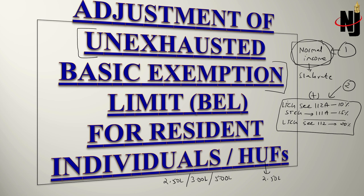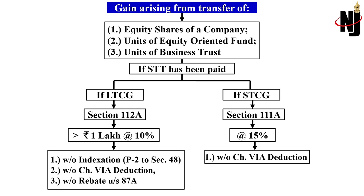Before proceeding further, let us recapitulate provisions of sections 112A and 111A. Special long-term capital gain and special short-term capital gain arise on transfer of three assets: equity shares of a company, units of an equity-oriented fund, and units of a business trust. If STT (securities transaction tax) has been paid, then long-term capital gain under section 112A exceeding the first 1 lakh will be taxable at 10%.